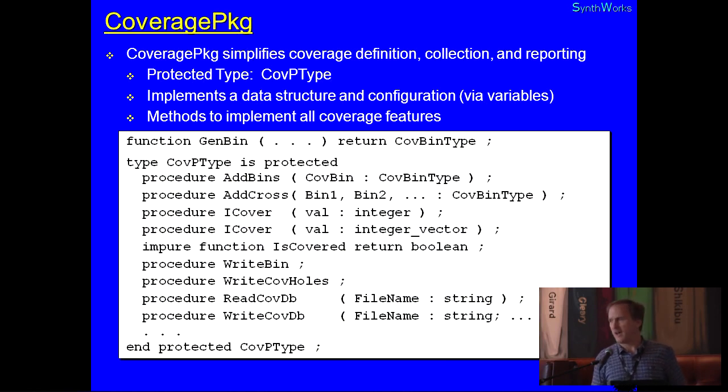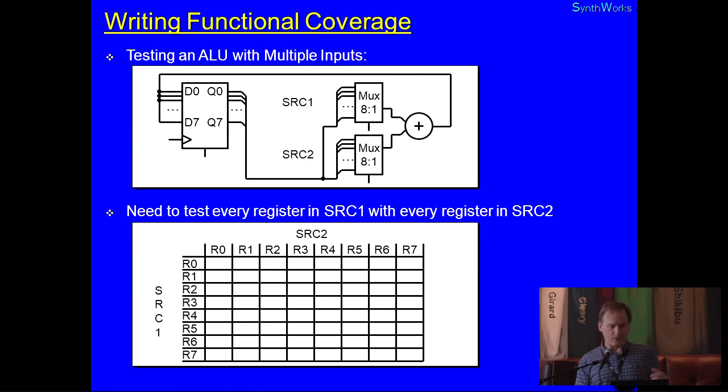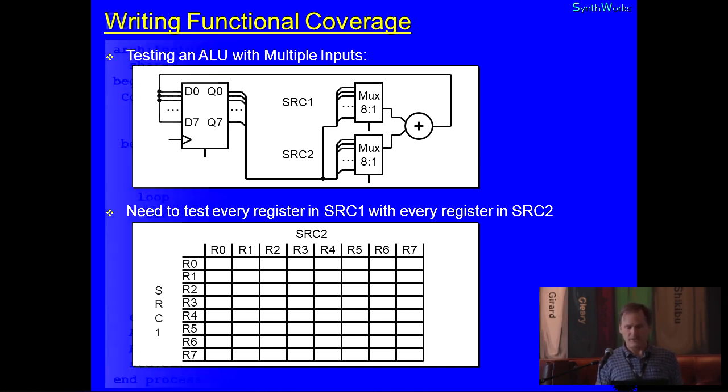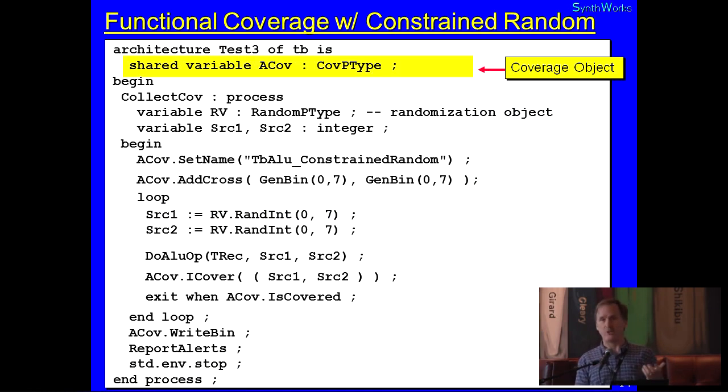So, OSVVM implements functional coverage via coverage package. It's basically a utility package. It builds a data structure inside. It has a protected type. And we actually go out and build a data structure of the coverage model. And let's take a look at how it works. First, our example, we're going to be looking at a very simple ALU. It's going to be an adder that takes eight different inputs from two different sides, from two different inputs. And we want to know, has each of the eight sets been used with each other? So, this is basically a Cartesian cross of all of our inputs. And this is probably the easiest thing for any language to do.